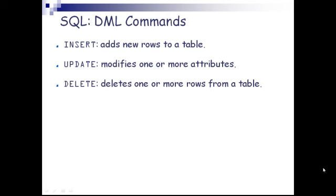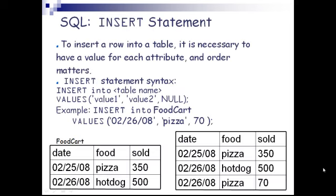DML commands: INSERT adds new rows to a table. UPDATE modifies one or more attributes. DELETE deletes one or more rows from a table. For the INSERT statement, to insert a row into a table it is necessary to have a value for each attribute and order matters. The syntax is: INSERT INTO table_name VALUES ('value1', 'value2', NULL).